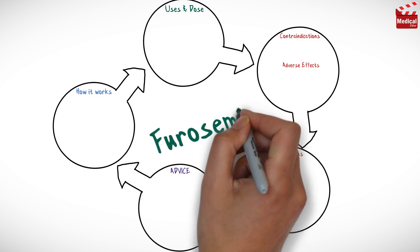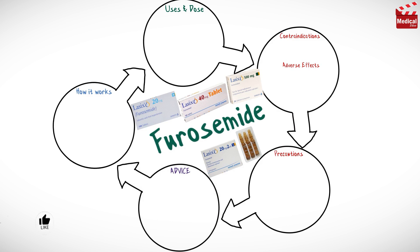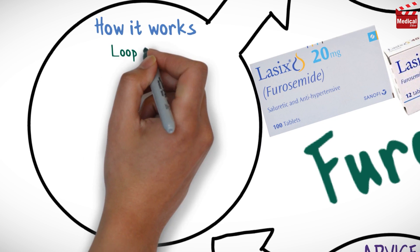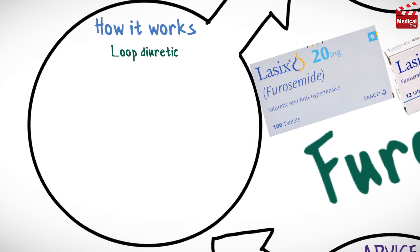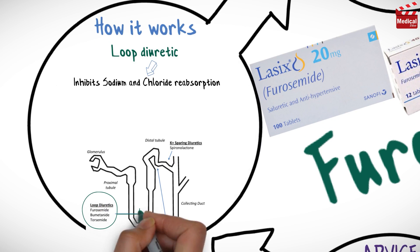In this video we'll briefly discuss how furosemide works, what it's used for, the dose and side effects, contraindications and precautions. Furosemide is a loop diuretic. It inhibits sodium and chloride reabsorption in the proximal part of the ascending loop of Henle.